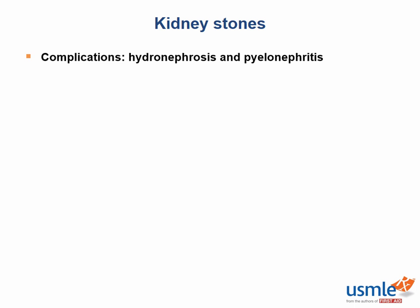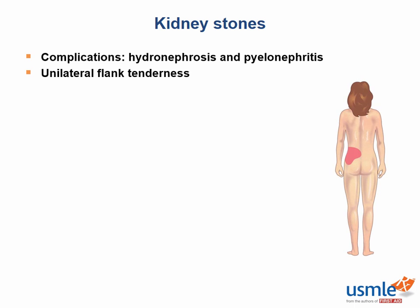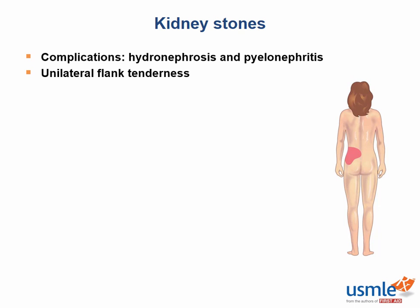Kidney stones present with unilateral flank tenderness and colicky pain that radiates to the groin. Hematuria will also be present. There will not be red blood cell casts, because the problem is occurring after the renal tubules, so the red blood cells will not be able to form casts.